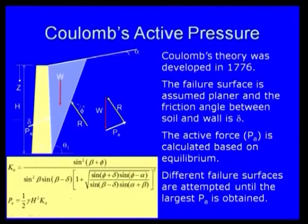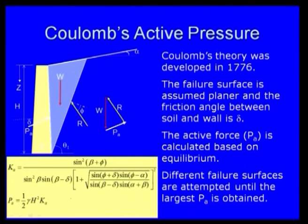We have finished Rankine's earth pressure theories. Now Coulomb's active earth pressure — Coulomb's theory was developed in 1776. In this case, the failure surface is assumed to be planar and they have considered the friction angle between soil and wall.